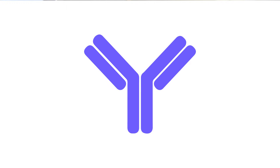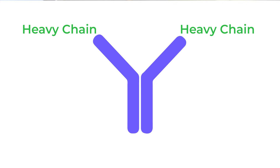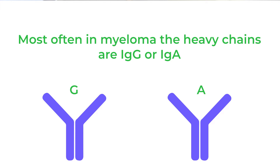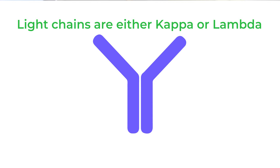If you picture this in your mind, the normal structure of an antibody molecule is like a big Y. Those are the two heavy chains that are the type of immunoglobulins. As mentioned, most often in myeloma it's IgG or IgA. But on each side of that molecule there is a flanking piece called a light chain, and that will be either kappa or lambda.